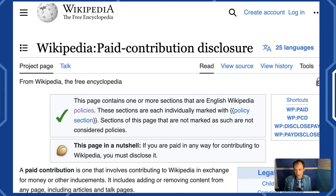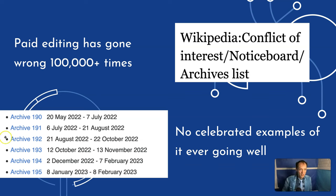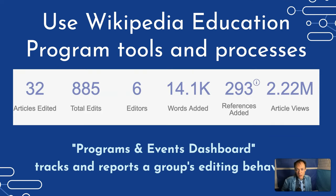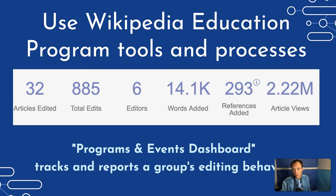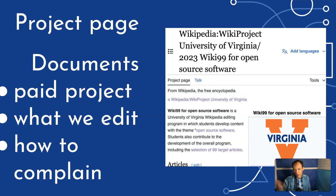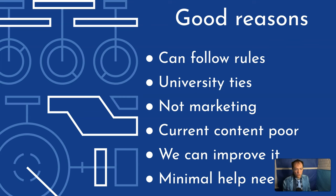Read all the documentation and rules — equivalent to hundreds of pages. Go to the noticeboard where paid editing has gone wrong; you'll find many tens of thousands of cases where it has. Use documentation software. There's something called the Wikipedia Education Program, which organizes students to edit Wikipedia articles as a class — we set this up. Some edits were recorded through this, though not all, since some students did offline research that was submitted in other ways. The dashboard tracks editors, what they did, and links to revision history. We had good reasons for doing this: the content wasn't good, and we wanted to tap into university expertise to make it better.